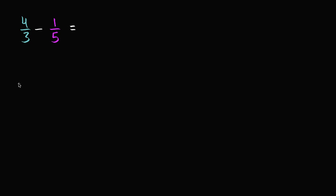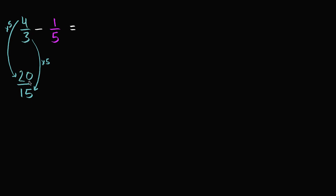What is 4/3 if we write it as something over 15? To get from 3 to 15 in the denominator, we have to multiply by 5. If you multiply the denominator by 5 and you don't want to change the value of the fraction, you have to multiply the numerator by 5 as well. 4 times 5 is 20, so 4/3 is the same thing as 20/15.